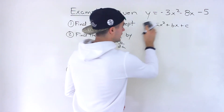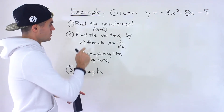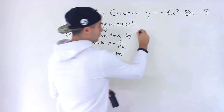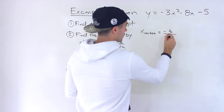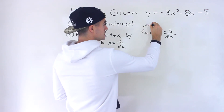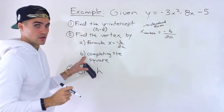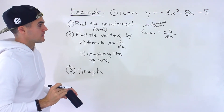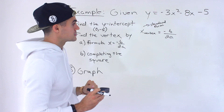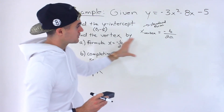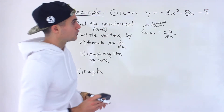Getting the y-intercept is easy if the quadratic is in standard form. Now for number two, we find the vertex in two different ways. First, using the formula x equals negative b over 2a, which gives us the x-value of the vertex. To use this formula, the quadratic must be in standard form. Completing the square is another method, and it's a nice way to cross-check your answer. Once we get the x-value of the vertex, we plug it in to get the corresponding y-value.